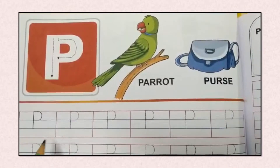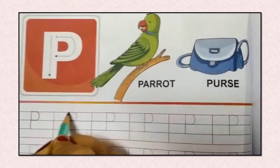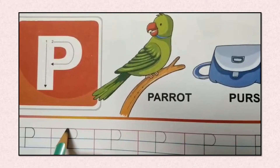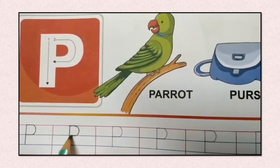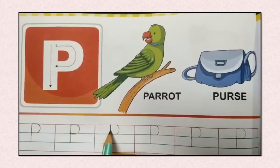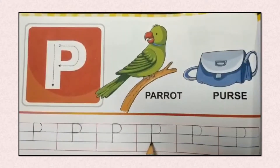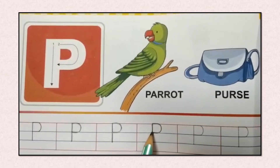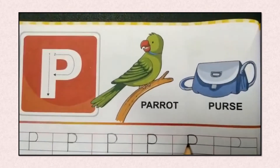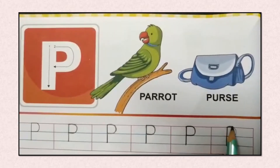Now, children, we will learn how to write alphabet P. First, we will write a standing line. Then go to the top and make a backward curve to the middle. That is P. Standing line, a backward curve — P. Standing line, a backward curve from top to middle of the standing line.